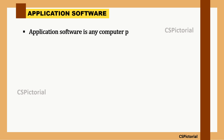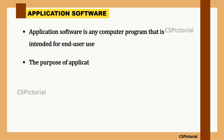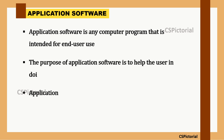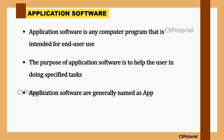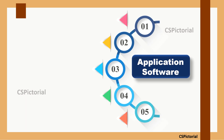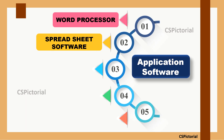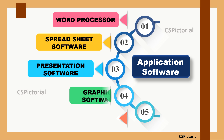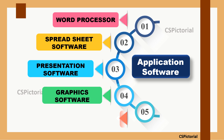Application software is any computer program intended for end-user use, and its purpose is to help users in doing specific tasks. A few commonly used application software types are: word processor, spreadsheet software, presentation software, graphics software, and web browsers.